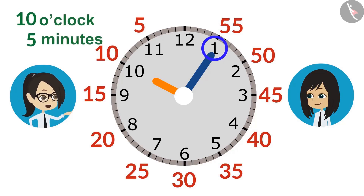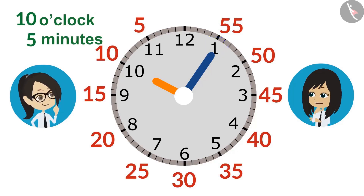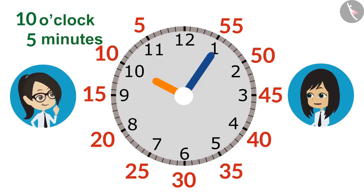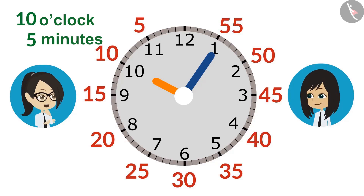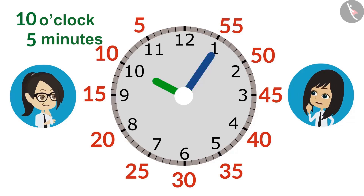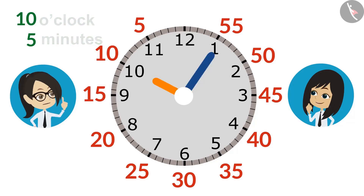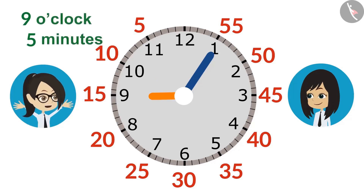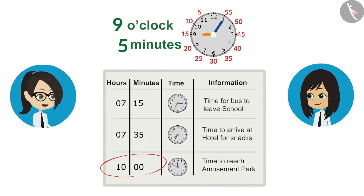This means we have to leave the hotel at 5 minutes past 10 o'clock. No, Vandana, this is incorrect. How is it incorrect? 5 minutes past 10 o'clock means it is after 10 o'clock, whereas we have to leave 55 minutes before 10 o'clock. You moved the minute hand behind but forgot to move the hour hand. It's 9 o'clock before 10 o'clock. This means we have to leave the hotel at 5 minutes past 9 o'clock so that we reach the amusement park at 10 o'clock.